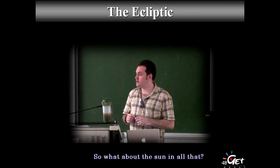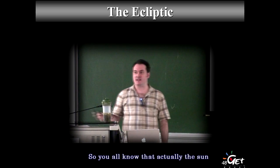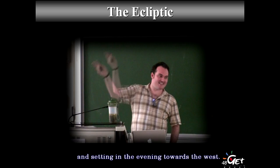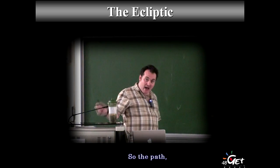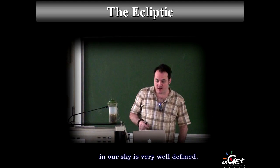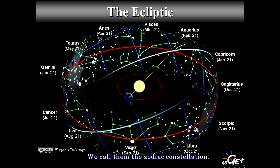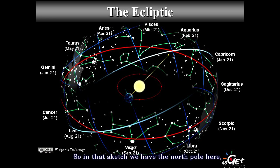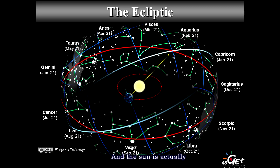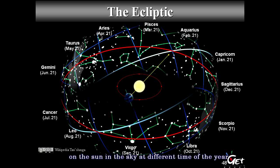Now, what about the Sun? You all know the Sun crosses the sky, rising in the east in the morning and setting in the west in the evening. The path of the Sun on the celestial sphere is called the ecliptic. You probably know the ecliptic constellations — we call them the zodiac constellations. The ecliptic is the path of the Sun on the celestial sphere relative to the poles. This sketch shows the north pole and south pole, with the celestial equator in red, and the Sun orbiting along the ecliptic line.